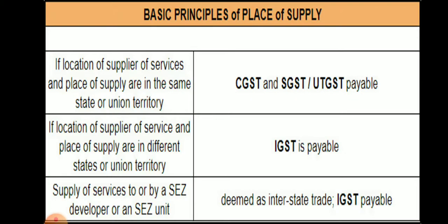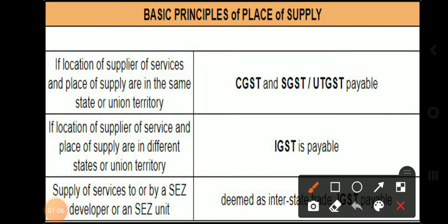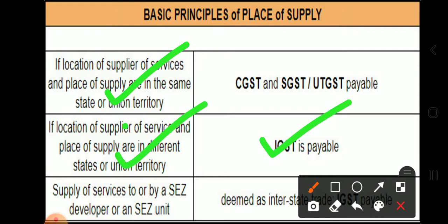Depending upon this, the basic principles of place of supply include: if location of supplier of services and place of supply are in the same state or union territory, उस case में CGST applicable होगा. If location of supplier of service and place of supply are in different states, तो IGST applicable होगा.